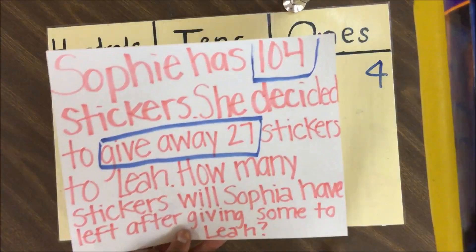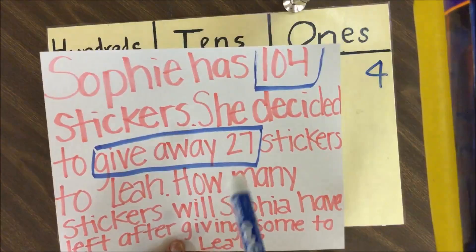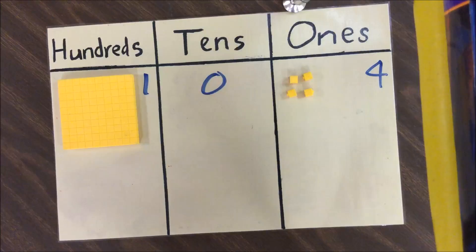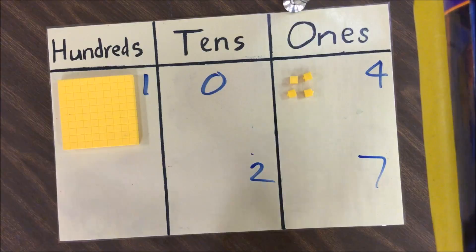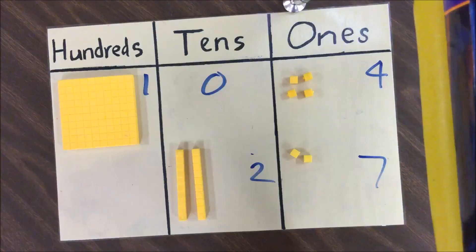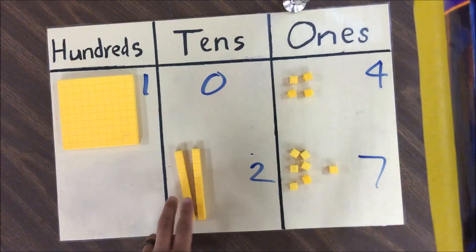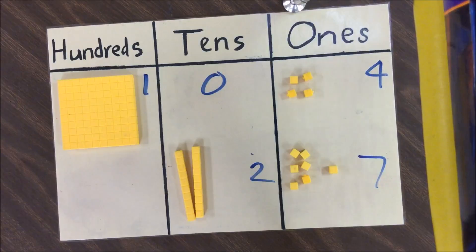Now that we've cleared that up, we're going to look back at our word problem. Sophia had 104 stickers and she's giving away 27, so we're going to represent 27 and show how we can take that away using base-10 blocks. We'll write twenty-seven as two in the tens place and seven in the ones place, and represent it with our base-10 blocks: two tens rods — 1, 2 — and seven individual cubes — 1, 2, 3, 4, 5, 6, 7.